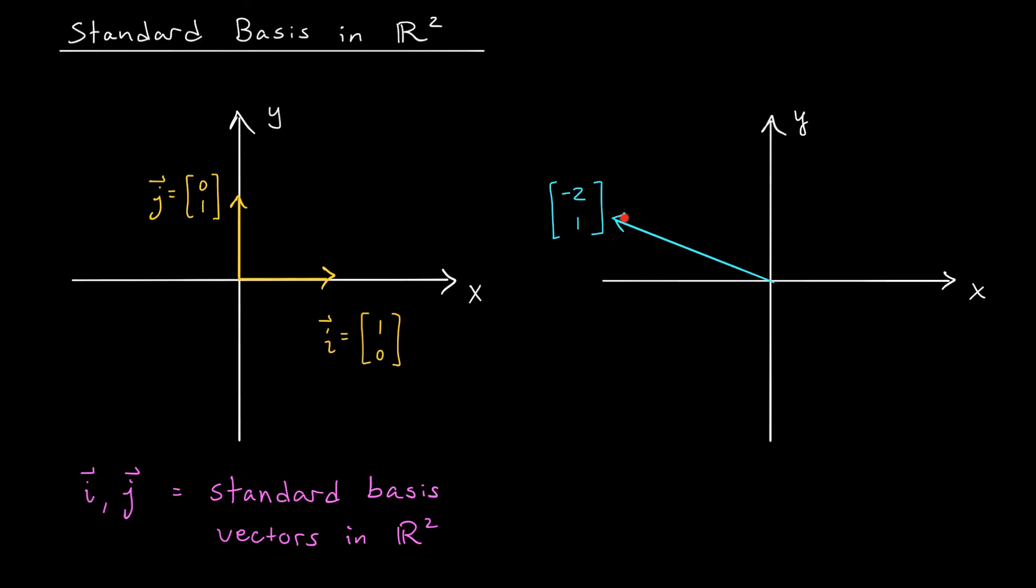For example, suppose you want to form the vector minus 2, 1. Well, that's really a combination of minus 2 times I plus 1 times J. And just as we did on the last slide, we can visualize this in our Cartesian plane. It looks something like this.